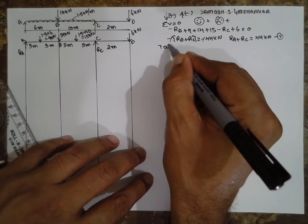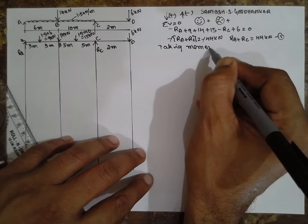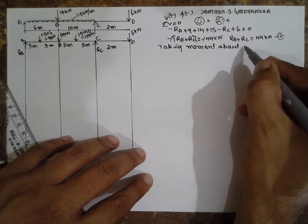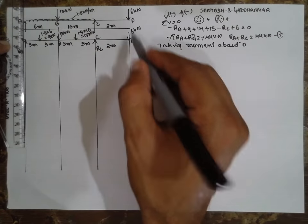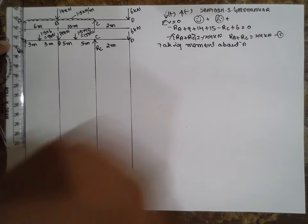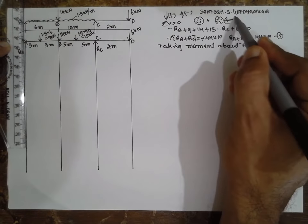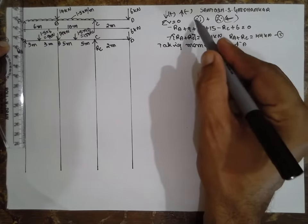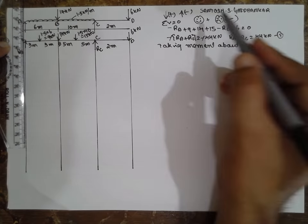Taking moment about A. Clockwise moments are considered negative, anticlockwise moments are positive. The loads acting downward will cause sagging; if the load acts upward, hogging occurs.